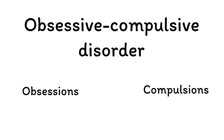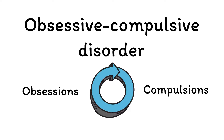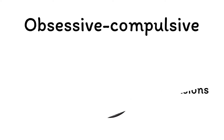In the last video, we learned about obsessive compulsive disorder, including obsessions, compulsions, and the disordered loop between the two. While OCD is the prototypical disorder involving these features, there are a number of other disorders that also fit this pattern.